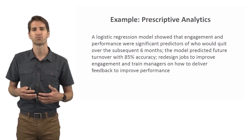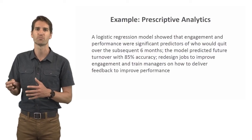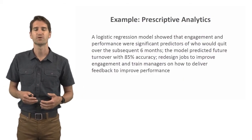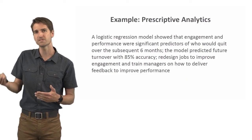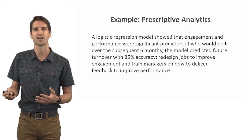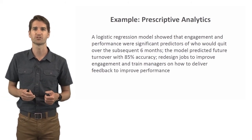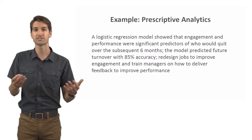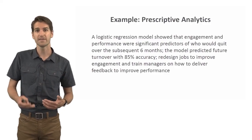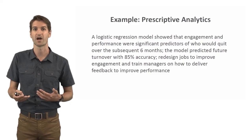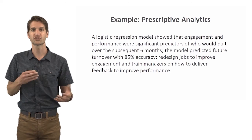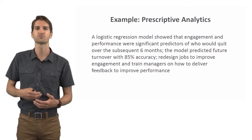Using the logistic regression example from before — where engagement and performance were significant predictors of quitting over six months, and the model predicted future turnover with 85% accuracy — we now take prescriptive action. For engagement, we might redesign jobs to improve it, adding more autonomy, greater task significance, and greater task identity. For performance, we might train managers on how to deliver feedback. These are steps to turn predictive analytics into something actionable, which is where the most value lies for the company.